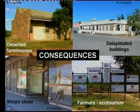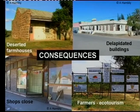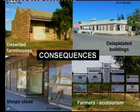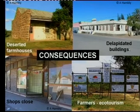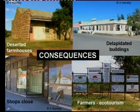Here I've brought a few photos of the consequences. We've got deserted farmhouses here, dilapidated buildings in a rural town, and shops that close. Because if the people leave, people don't spend money, and the shop owners don't make any money — the result is they close the shop. Interestingly, farmers can start something like ecotourism to attract people to the rural areas. These, shortly, are the consequences of rural depopulation.